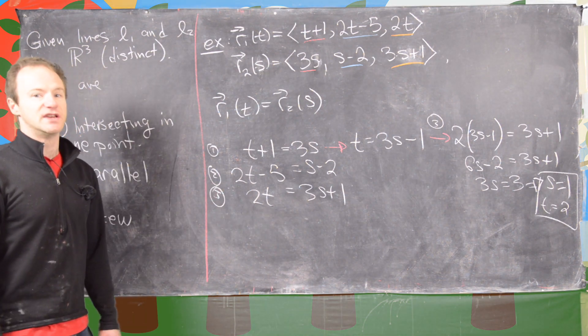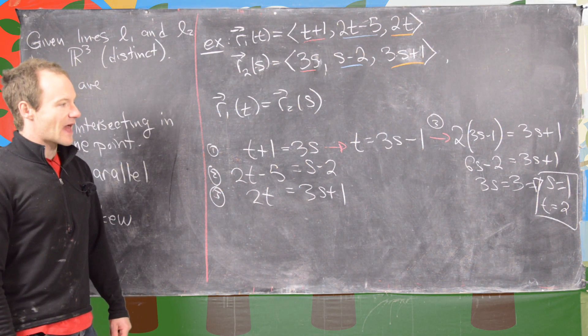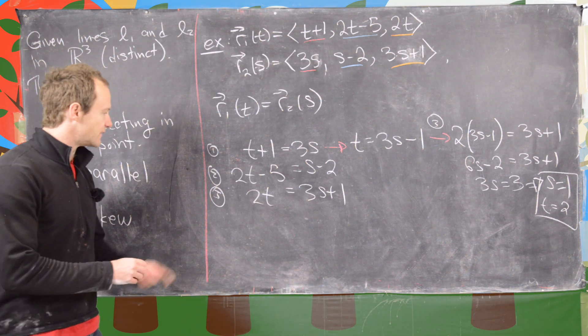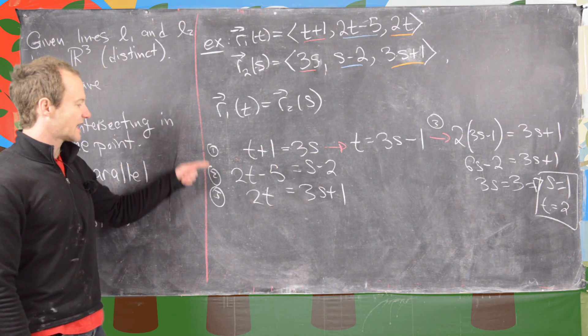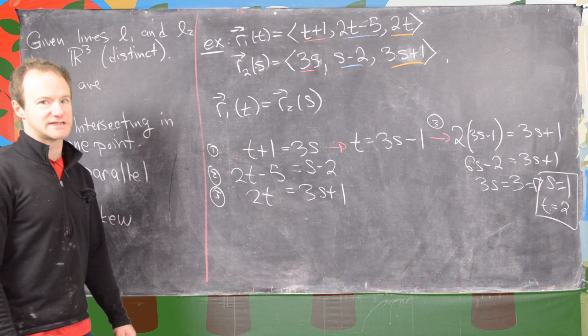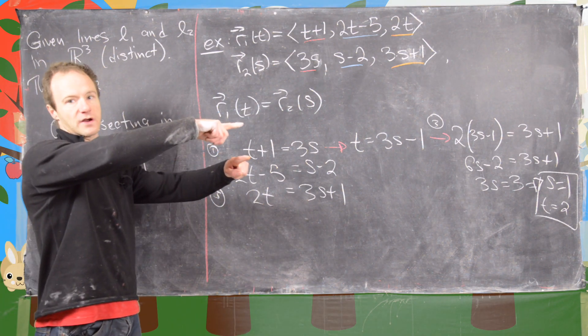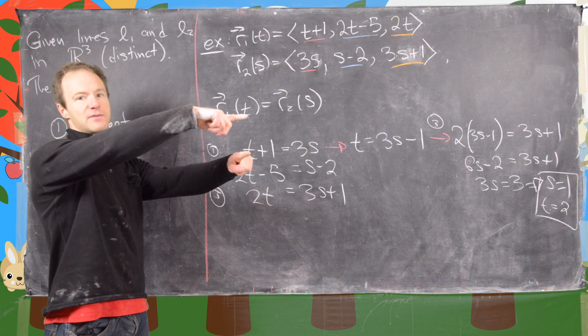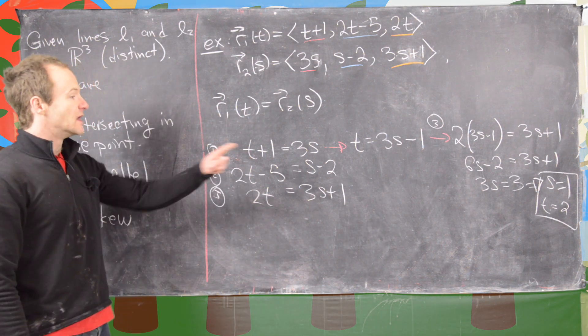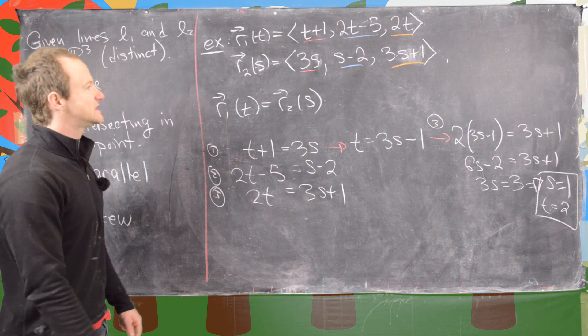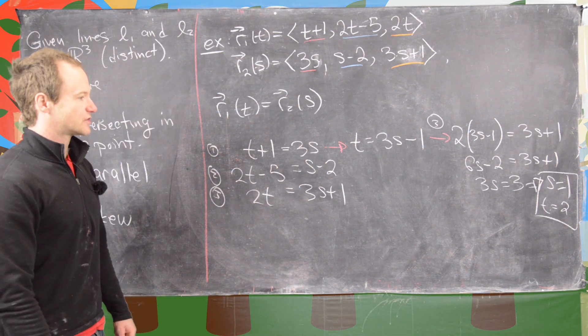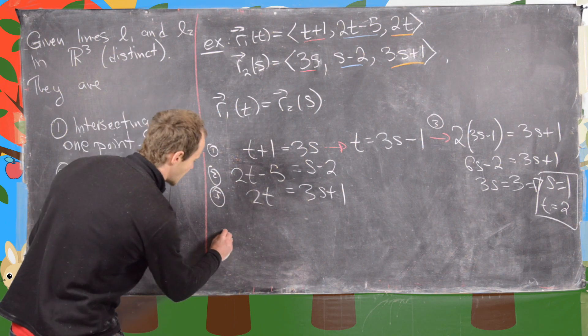But that's actually not enough to show that these two intersect because we've only used equation 1 and equation 3. In other words, their x coordinate and z coordinate are the same, but their y coordinate could be different. So I'd like to plug that value of T and S into the original vector equations of the lines just to check.